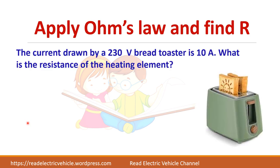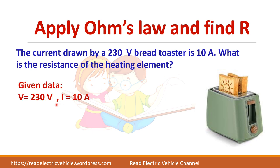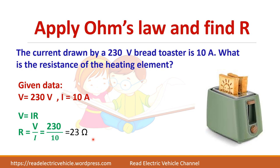Let us apply Ohm's Law to find resistance. The current drawn by a 230-volt bread toaster is 10 amps. The resistance R equals V by I, so R equals 230 divided by 10, which is 23 ohms.